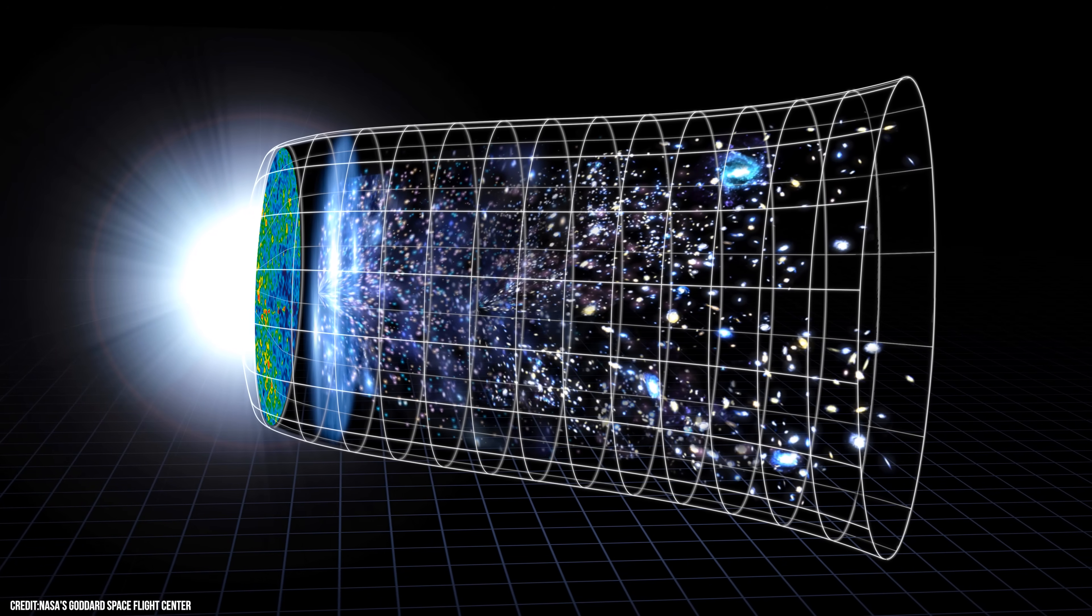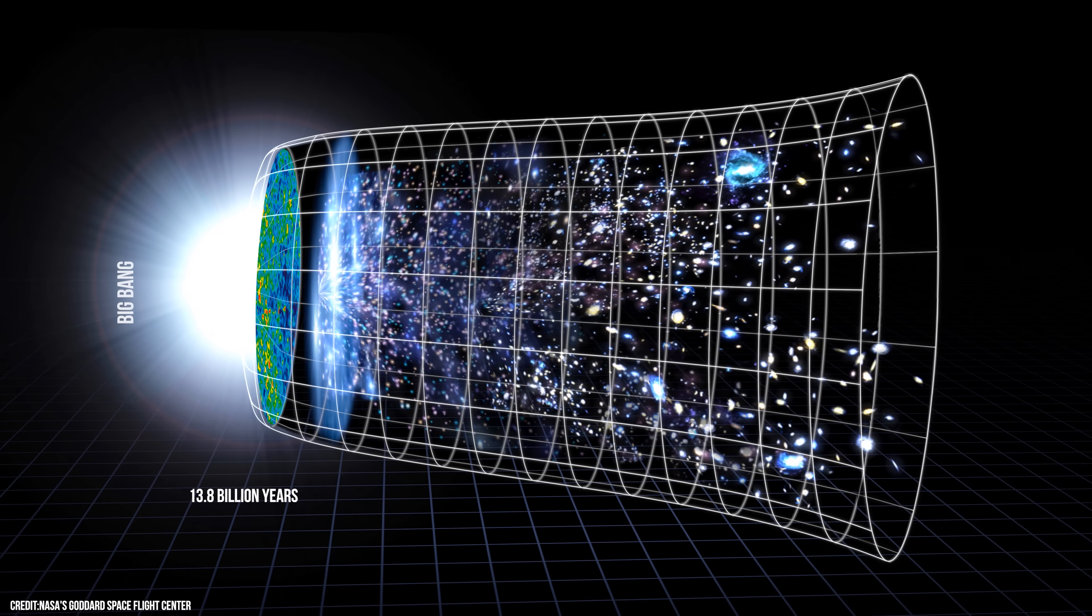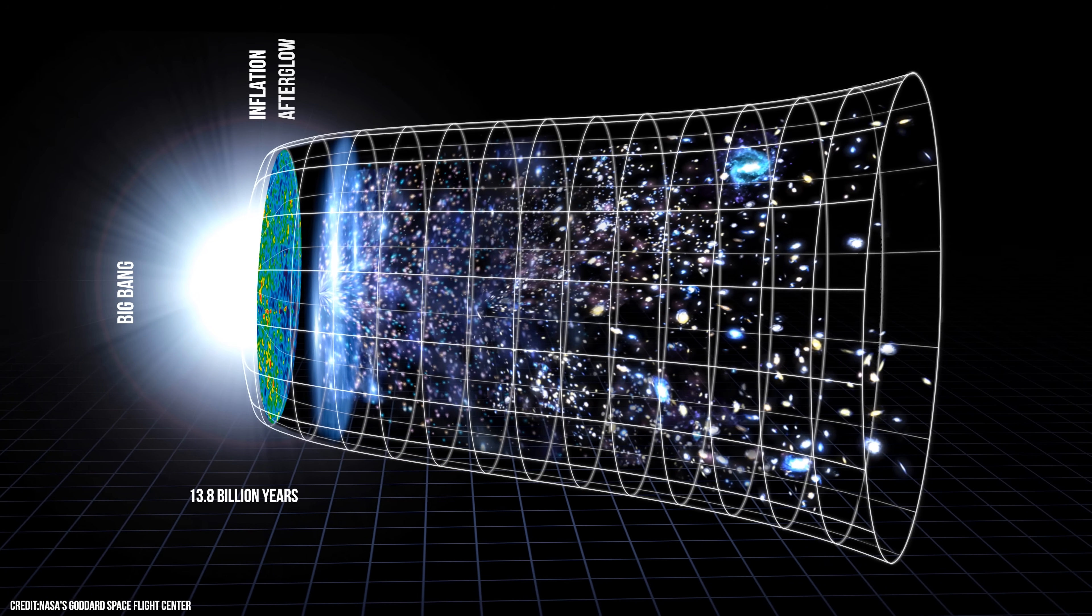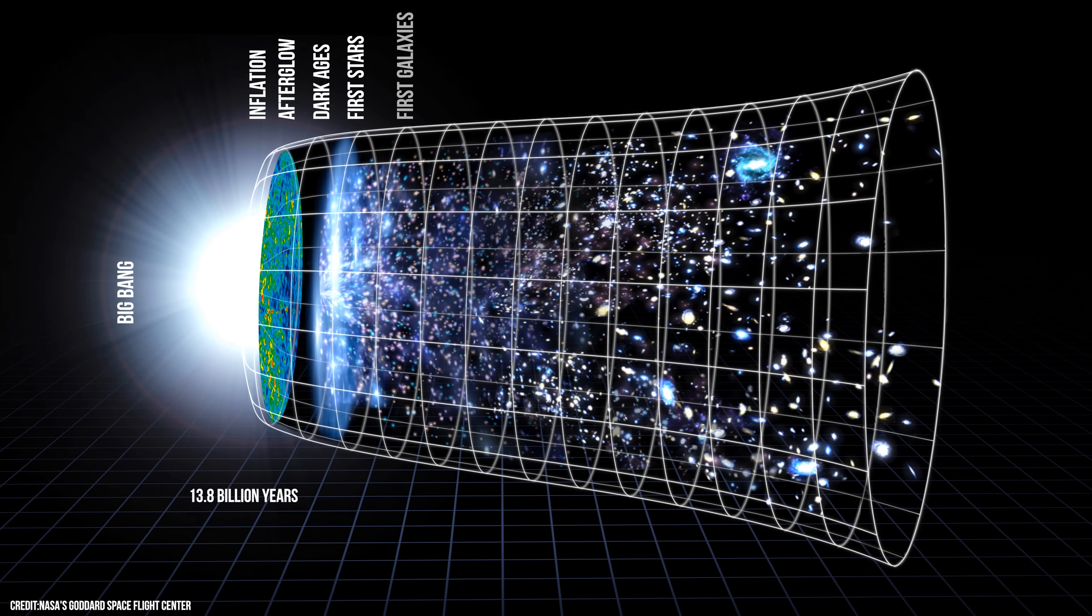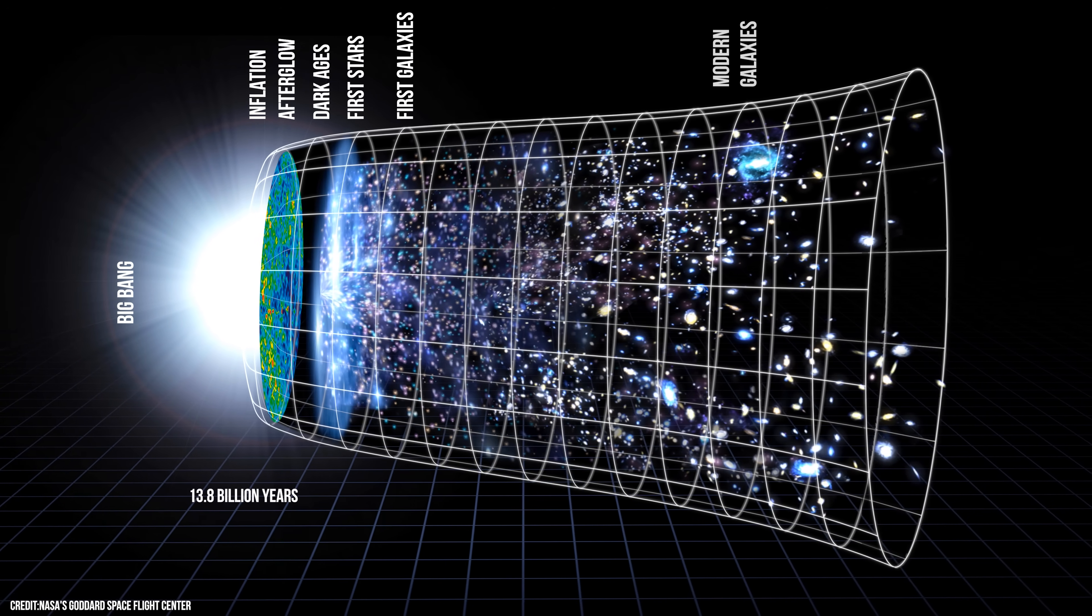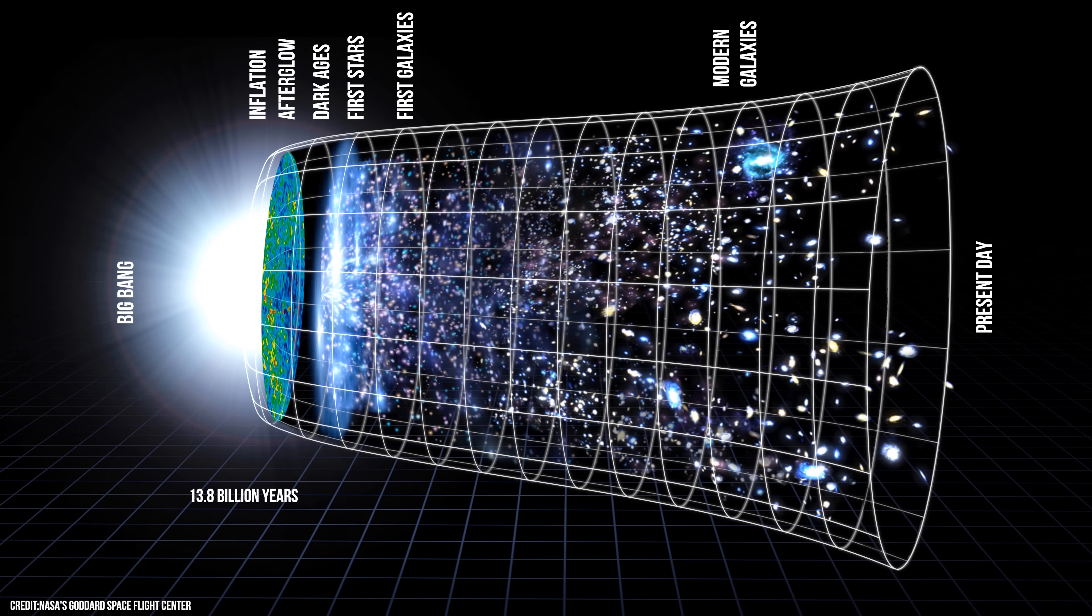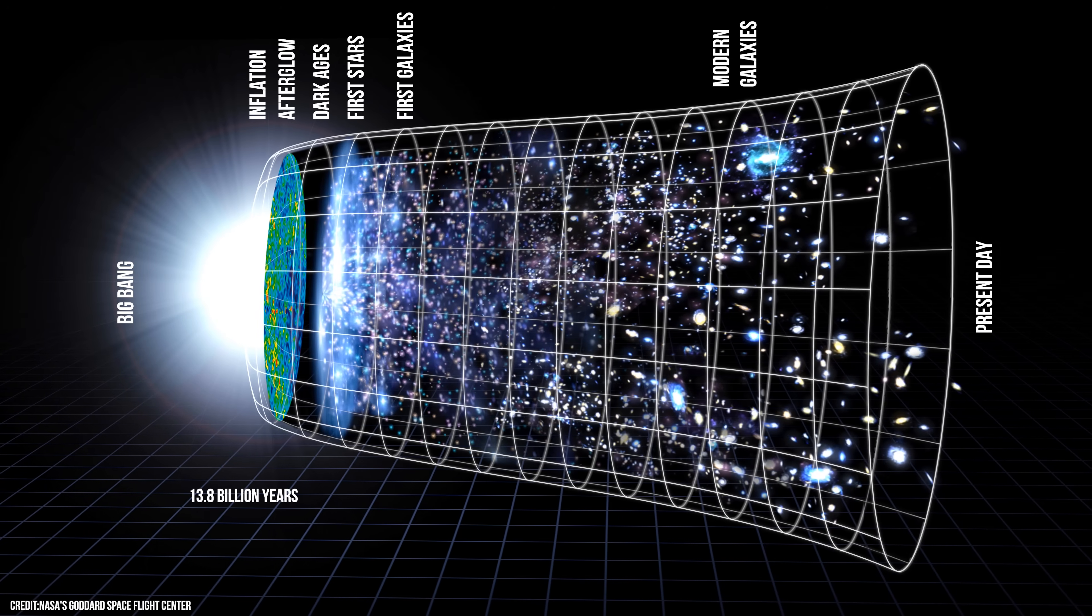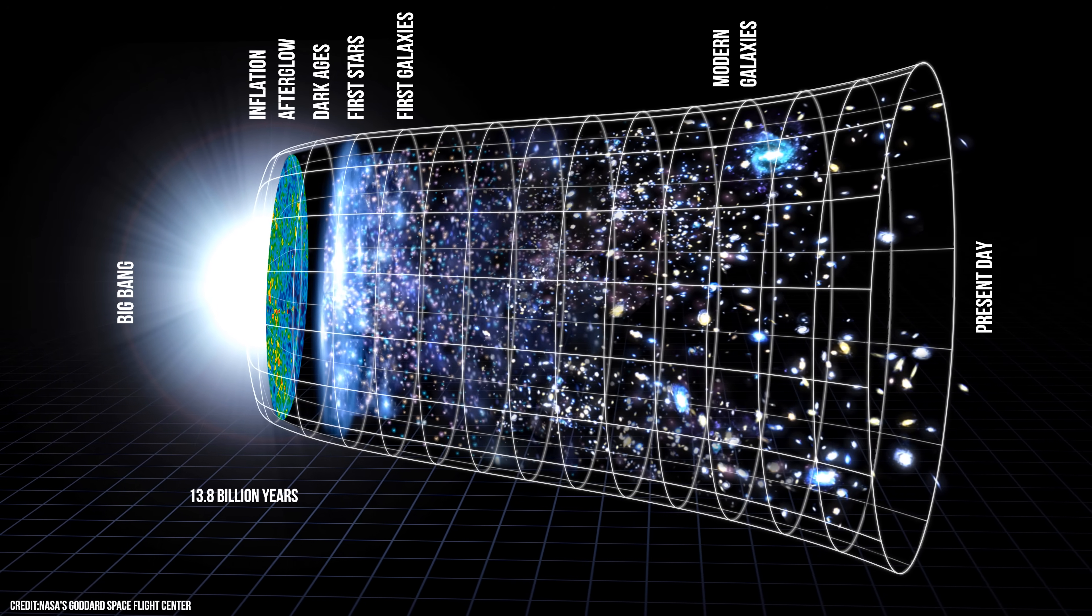According to the Big Bang Theory, 13.8 billion years ago, time and space began. The building blocks of everything we see today burst into existence. No one knows what came before this moment. It is the point from which our understanding of the universe breaks down. But despite the mystery of how it all started, researchers have been able to piece together a rough timeline of the major events that came after this incredible moment.